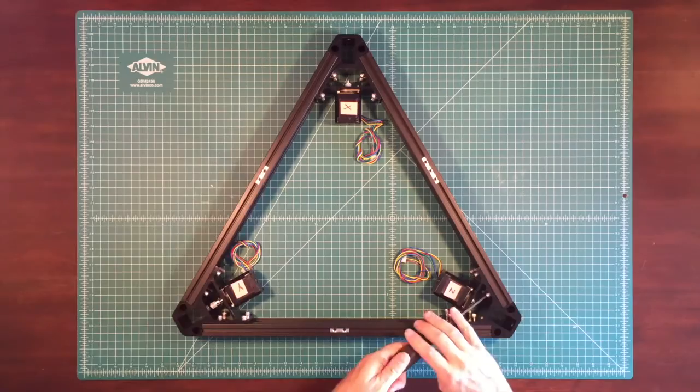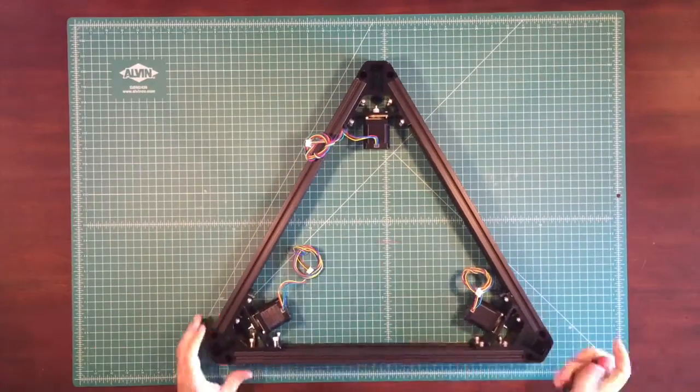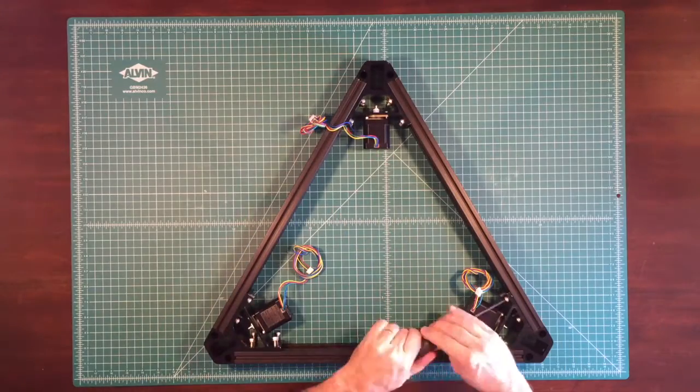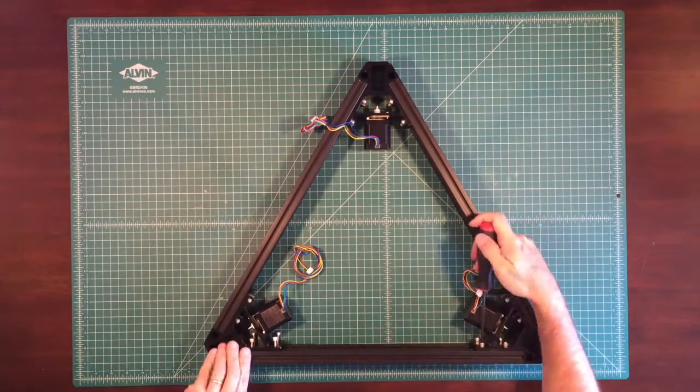Finally on a level surface square up the horizontal extrusion with the corner extrusion and tighten each M5 screw. Flip the assembly over and repeat.